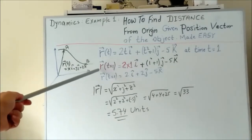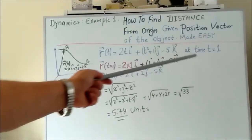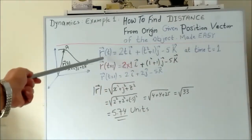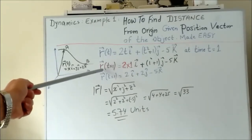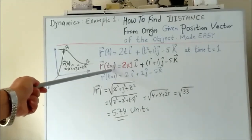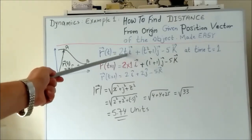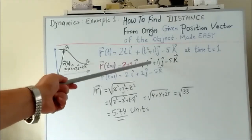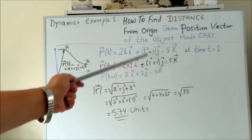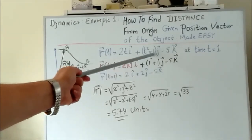So we substitute the values t equals 1 in this given equation. As we can see here, r(t) at time t equals 1 equals 2 times 1, plus t² so 1² plus 1j, minus 5k.